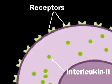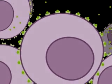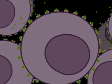IL-2 triggers helper T cells to divide. The daughter cells respond to interleukin-2 by producing a clone of cells identical to the first T cell in genetic makeup and immunologic specificity. Production of this clone completes the activation phase of the humoral immune response.